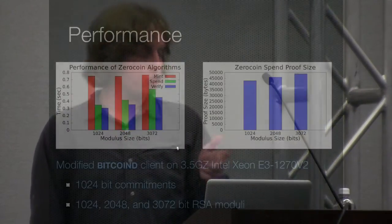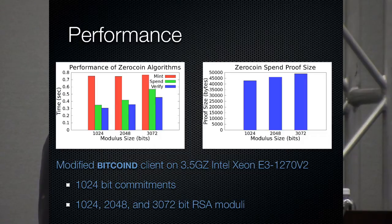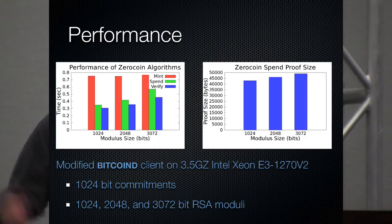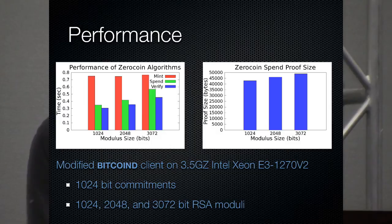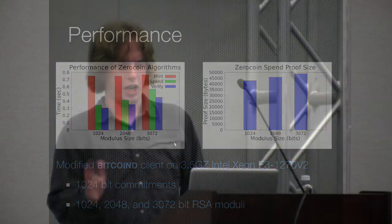So this works reasonably well for a prototype system. It takes about a second to make one of these coins. It takes about half a second to create the proof when you spend it, and another half a second to verify it. This is from a prototype implementation we have. There was a modified version of the Bitcoin-D client, which we should be releasing sometime in June. The problem, of course, with these things, though, is that the proofs are a little large. They're about 40 kilobytes right now. And we have some ways to fix that, which I will get to in a second.